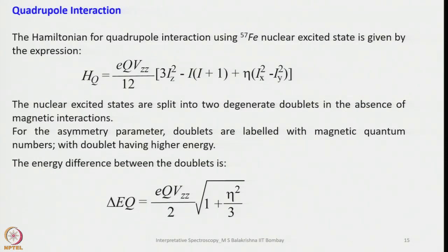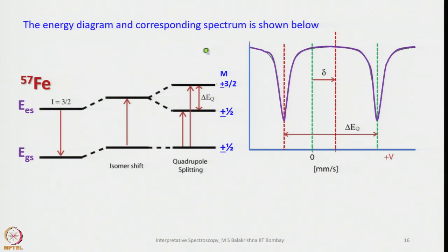The Hamiltonian for quadrupole interaction — again using iron-57's nuclear excited state — shows that the nuclear excited states are split into two degenerate doublets in the absence of magnetic interactions. For the asymmetry parameter η, doublets are labeled with magnetic quantum numbers. The energy difference between the doublets is given by: ΔE_Q = (eQV_zz/2) × √(1 + η²/3). The corresponding spectrum shows isomer shift and quadrupole splitting with two lines — one positive and one negative.